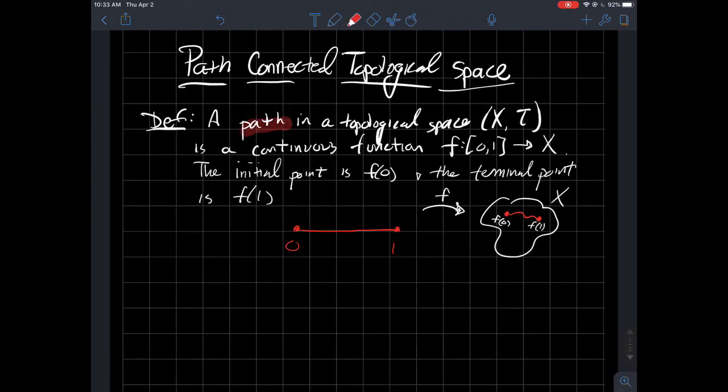A path in a topological space (X, T) is just a continuous function from the interval along the real line from 0 to 1, which I've drawn for you right here, from there to your space X.